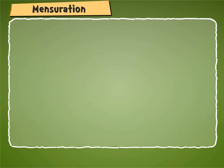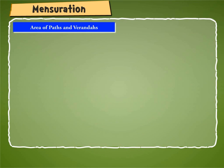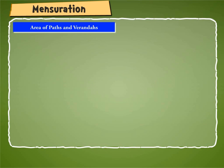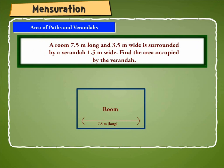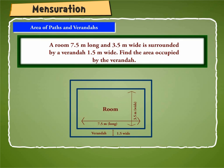Let us now understand how to find the area of paths and verandas. Area of a veranda is nothing but the difference between the areas of two rectangles. Let us understand this by taking an example. Suppose a room 7.5 meter long and 3.5 meter wide is surrounded by a veranda 1.5 meter wide. Now let us find the area occupied by the veranda.